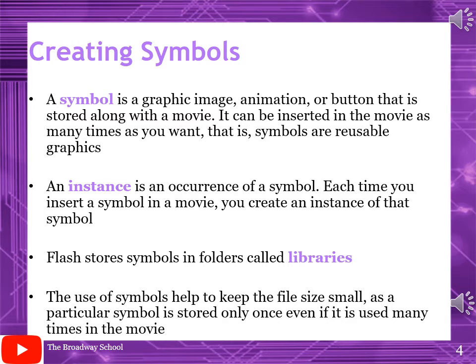Creating symbols: a symbol is a graphic image, animation, or button that is stored along with a movie. It can be inserted in the movie as many times as you want — symbols are reusable graphics. The thing you want to use again and again, you make a symbol for it and store it in the library. An instance is an occurrence of a symbol; each time you insert a symbol in a movie, you create an instance of that symbol. Flash stores symbols in folders called libraries.